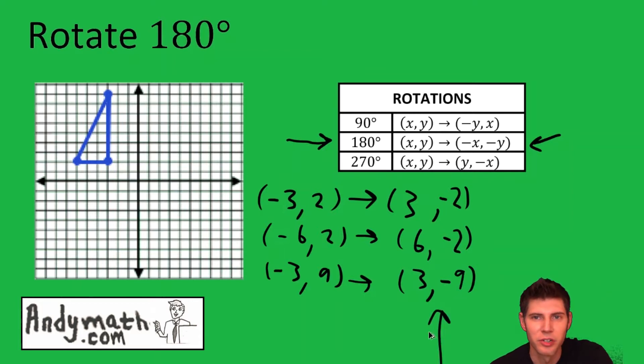Now we're going to plot these points that we just found. Three, negative two; six, negative two; and three, negative nine.